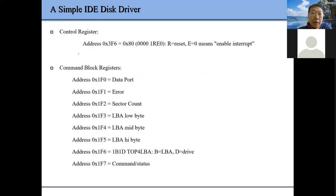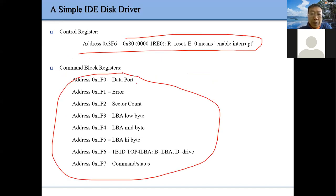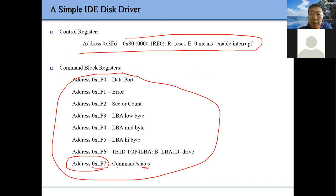We have some control registers related to the interrupt — this one is the most important one. When we issue read/write commands and check the status, we go to this IO port address 0x1F7.